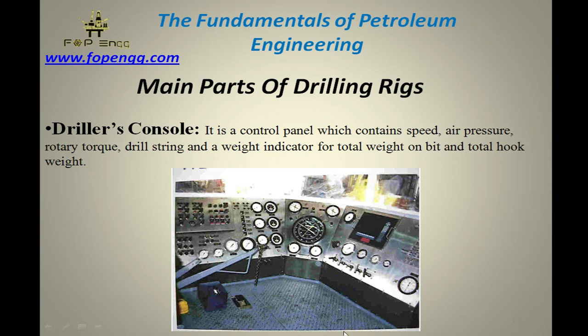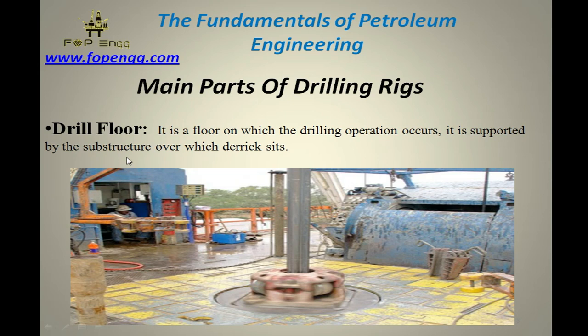Driller console — this is the driller console from which the driller can control the running in and pulling out of the drill pipes. He can see the weight indicator, the pressure gauges, and all the sensors. There is a brake from which he can control the drill pipes. It is a control panel containing speed, air pressure, rotary torque, drill string, and weight indicator for total weight on bit and total hook weight, as we have to calculate the weight on bit and the hook weight.